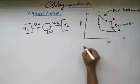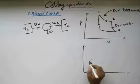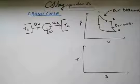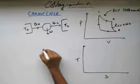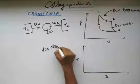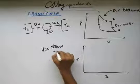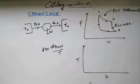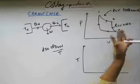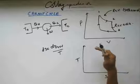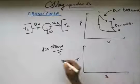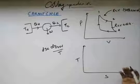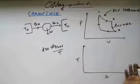Now, if we draw a diagram corresponding to temperature and entropy: going from state 1 to state 2, the temperature is constant. By definition of entropy, ds equals dq_reversible divided by T. Since this is a reversible process, whatever q is here equals dq_reversible. For an ideal gas undergoing isothermal expansion, internal energy is a function of temperature only, and since temperature is constant, internal energy remains constant.